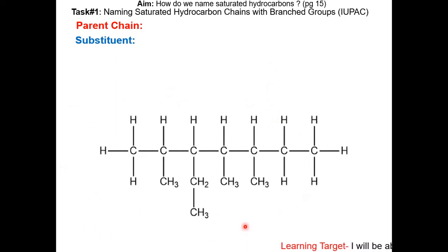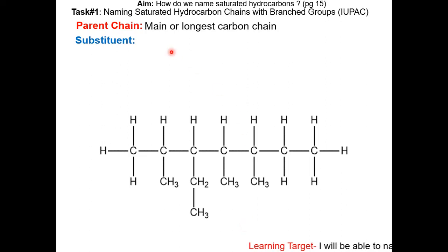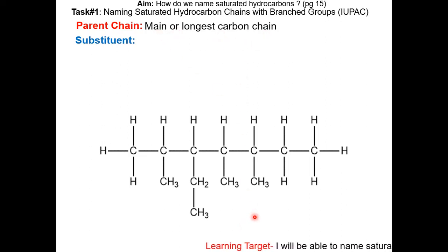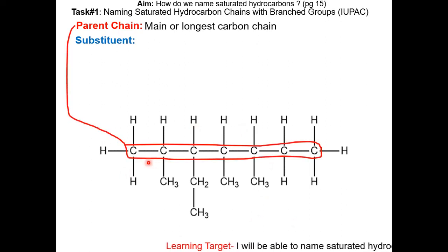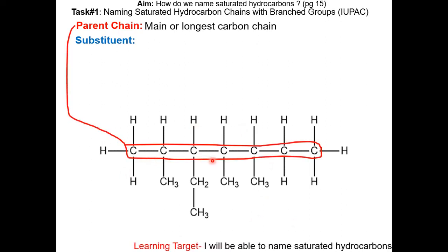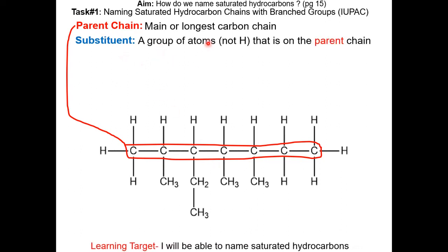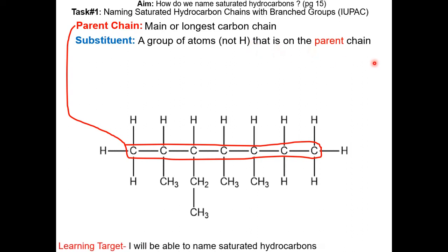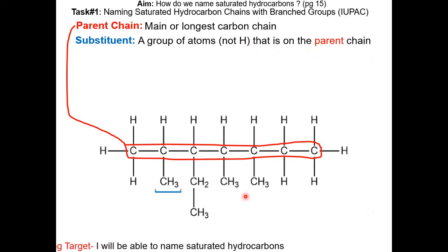The first step is to figure out the parent chain. The parent chain is the main or longest carbon chain. We're going to identify the parent chain in this example. The parent chain is 7 carbons long. The next step is to identify the substituent. A substituent is a group of atoms, not hydrogen, that is on the parent chain. Let's identify the substituents on this example.